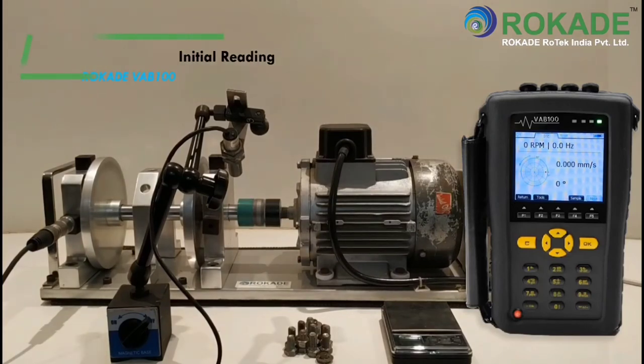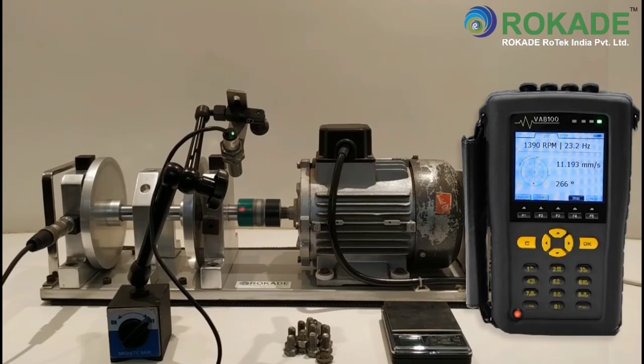Take the initial reading by clicking on sample. After the instrument displays the initial reading, click on stop to record the data, then go to next.